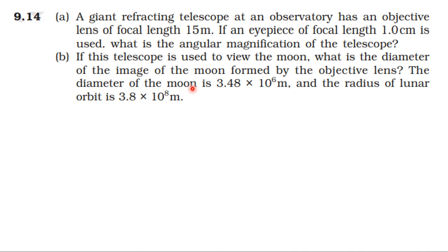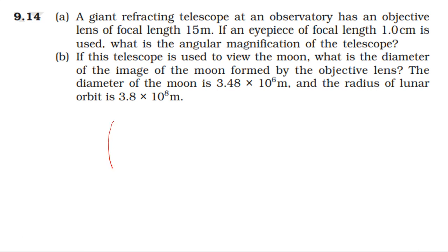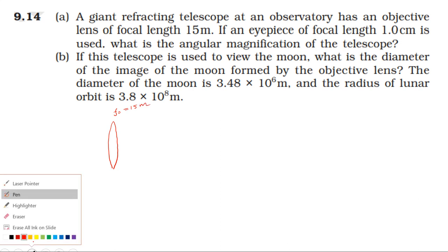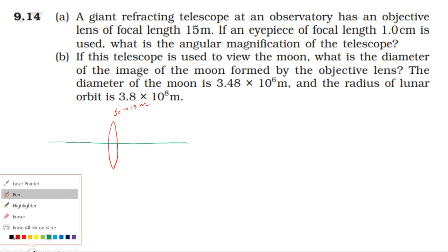The moon's diameter is 3.48 × 10⁶ meters and the distance between the moon and earth is 3.8 × 10⁸ meters. The objective lens focal length is 15 meters. We assume the moon's diameter is perpendicular to the principal axis.